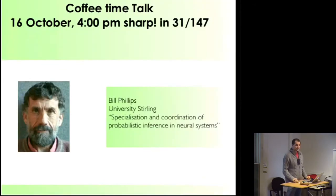One is a talk by Bill Phillips tomorrow. He's a professor at the University of Stirling, and he will talk about specialization and coordination of probabilistic inference in neural systems. This relates to the Bayesian story that the brain is essentially a big Bayesian machine, and he has done important work early on on coherent Infomax. The talk will be tomorrow, 4 p.m. sharp, here in this building.